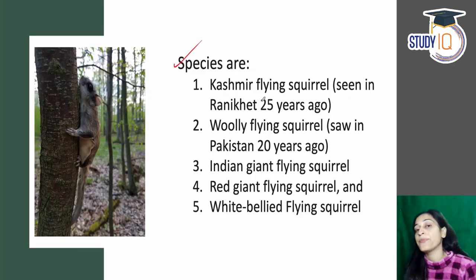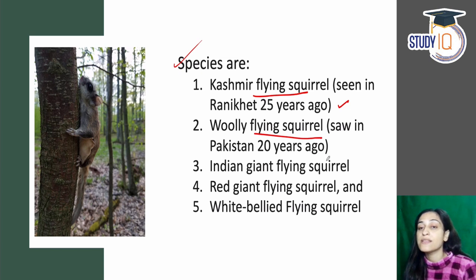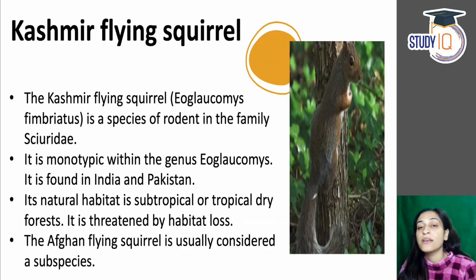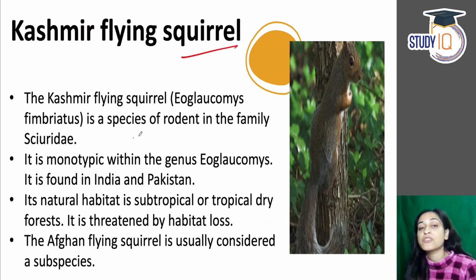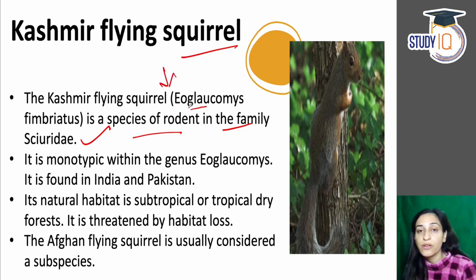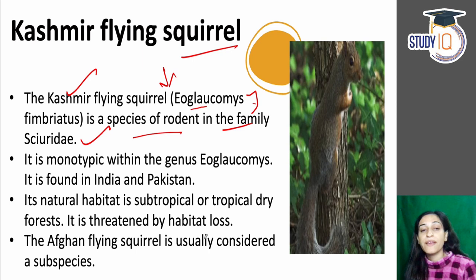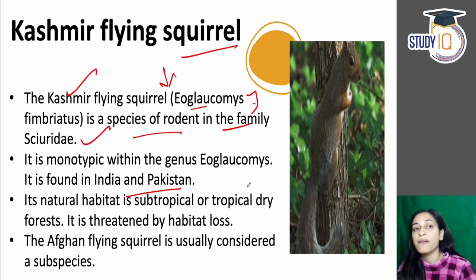Now, what are the 5 species? First is the Kashmir Flying Squirrel, which was seen in Rani Khet 25 years ago. It is a species of rodent in family Sciuridae. The scientific name is Eoglaucomys fimbriatus. It is found in India and Pakistan, with a habitat of tropical or subtropical dry forest. The Afghan Flying Squirrel is a subspecies of it.